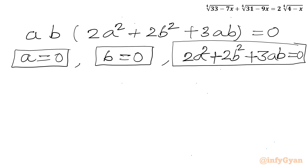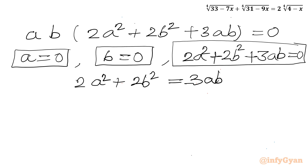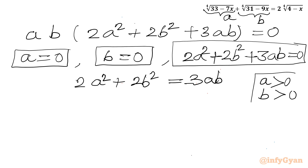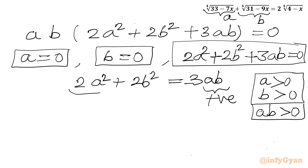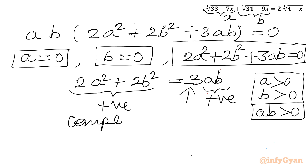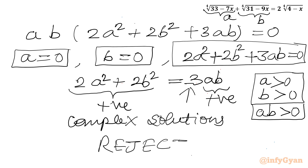Considering the third equation first: 2a² plus 2b² equals minus 3ab. Since a and b are 4th roots, both must be greater than or equal to 0 for real solutions, so their product ab is non-negative. The left-hand side is a sum of squares and is also non-negative, but the right-hand side is non-positive due to the minus sign. This leads only to complex solutions, so we reject this equation for real solutions.